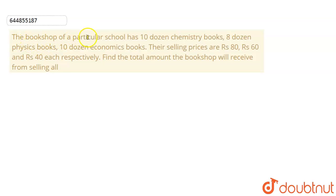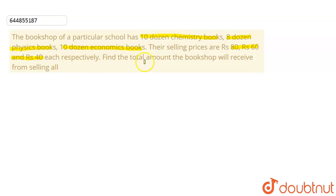The question is: the bookshop of a particular school has 10 dozen chemistry books, 8 dozen physics books, and 10 dozen economics books. Their selling prices are rupees 80, rupees 60, and rupees 40 each respectively. Find the total amount the bookshop will receive from selling all. We know that one dozen is equal to 12 items.